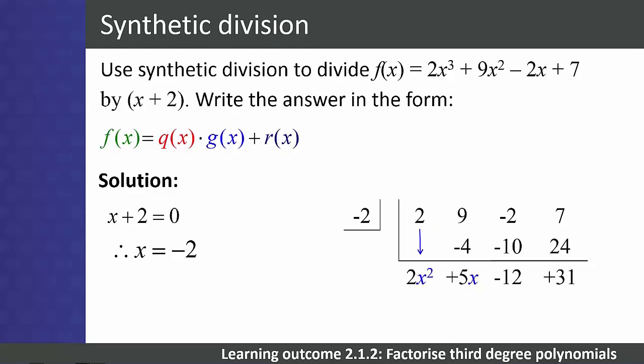Now write the final answer. The numbers in the bottom row are the coefficients. As you have divided a cubic polynomial by a linear polynomial, you now have a quadratic polynomial. So the quotient is 2x² + 5x - 12. The last number, 31, is the remainder.